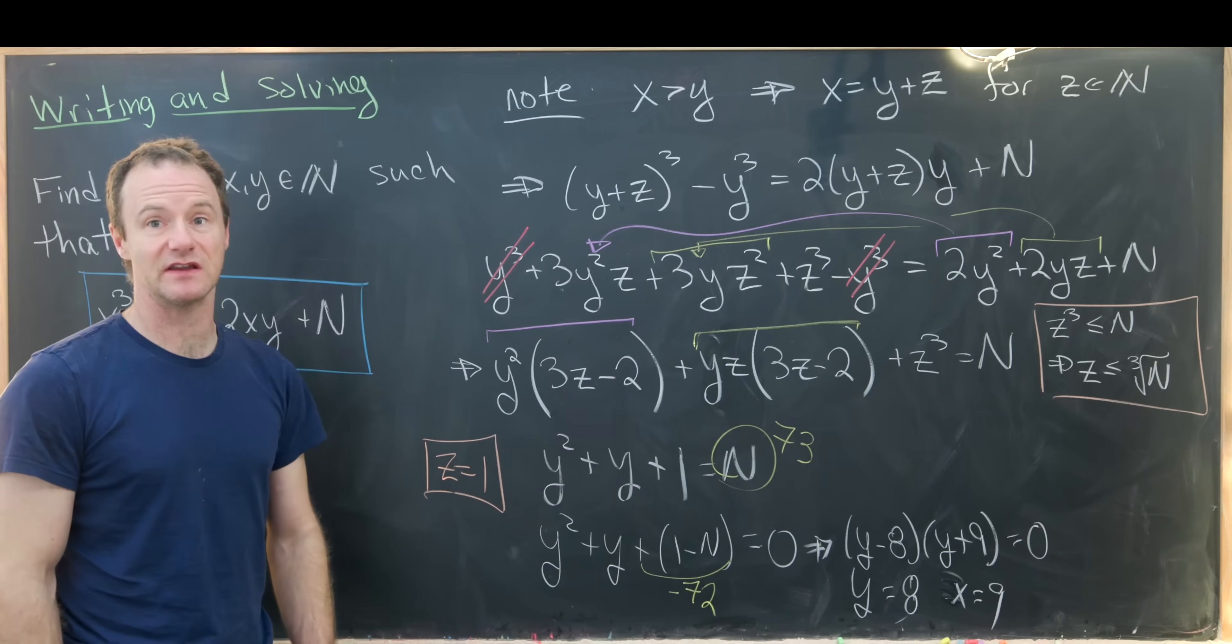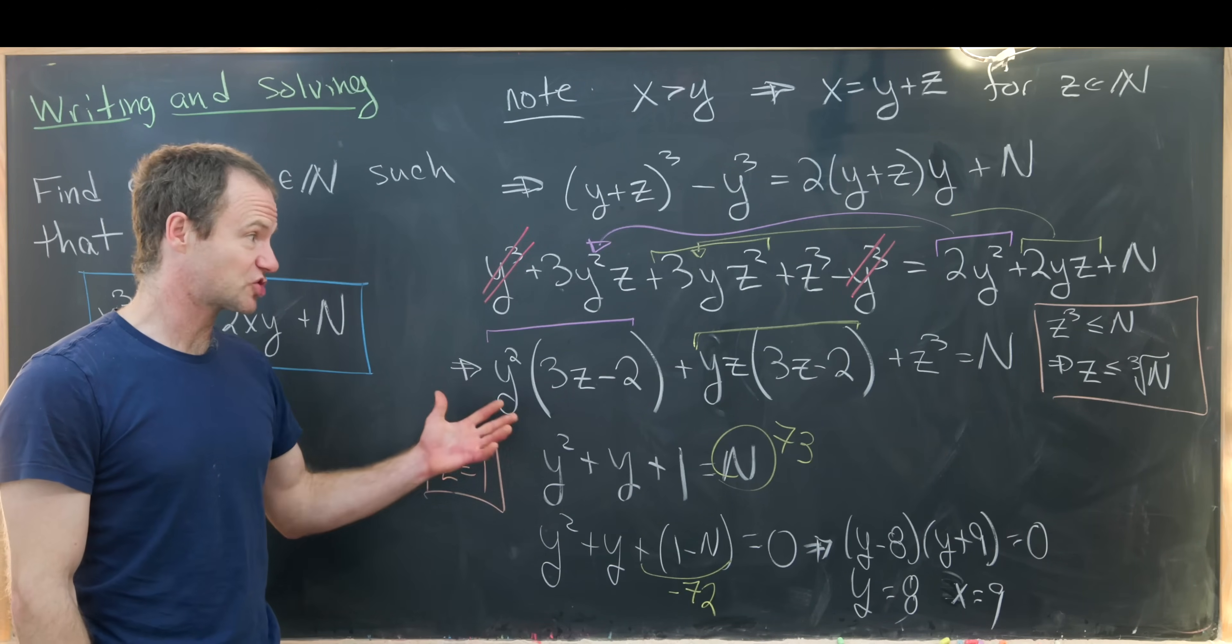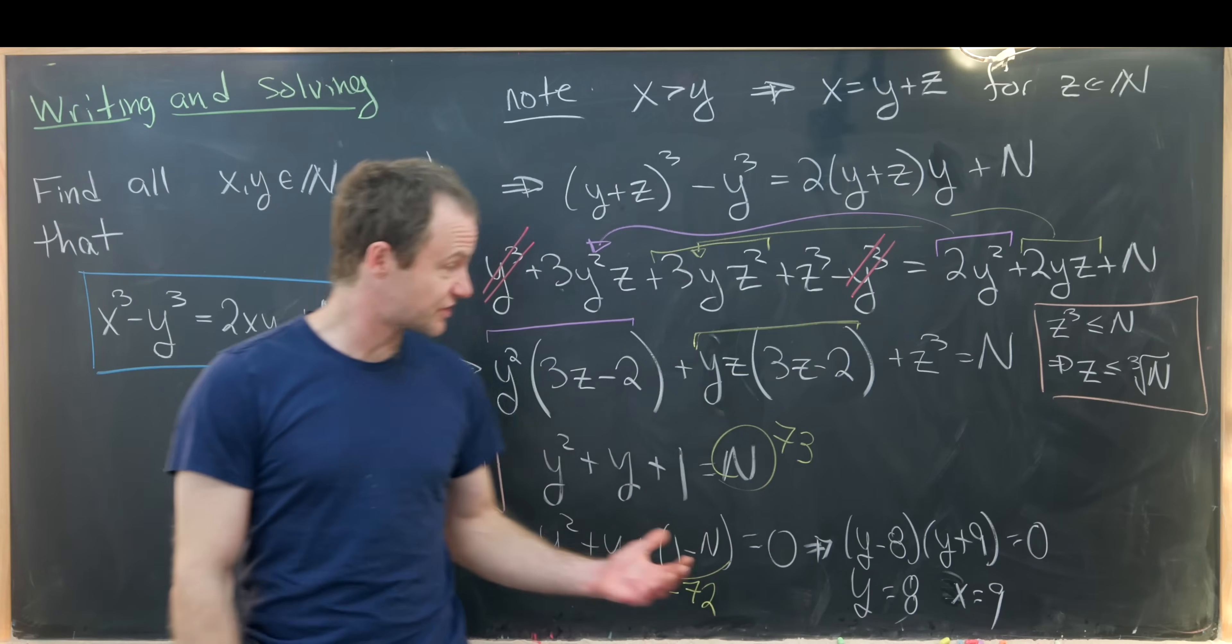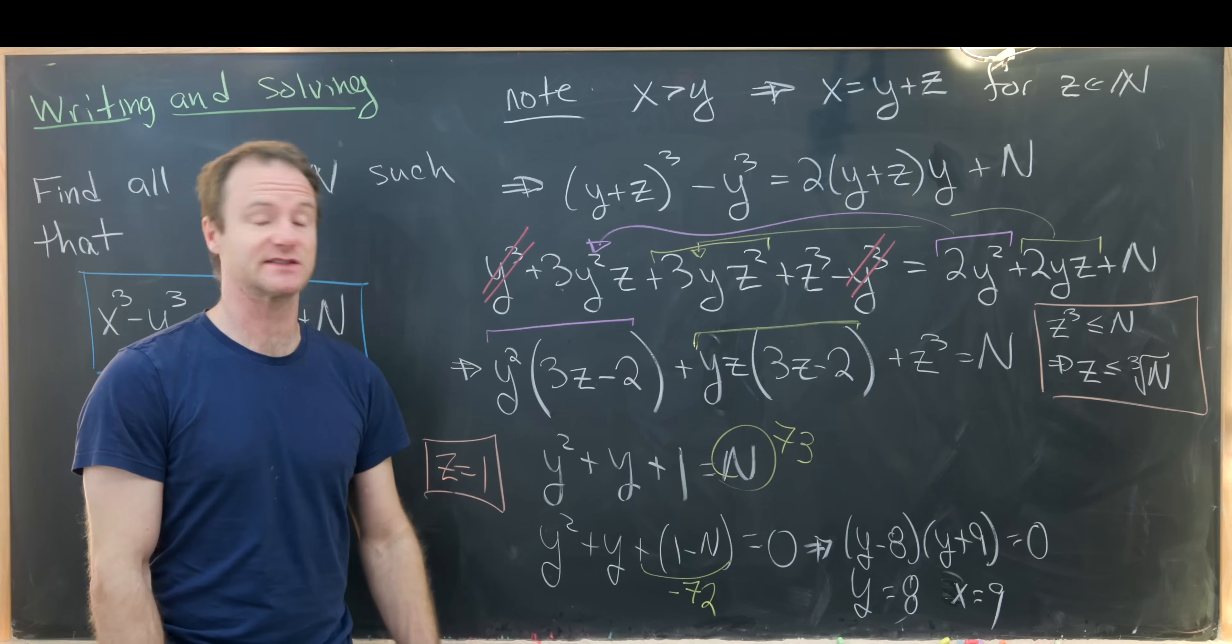So that gives us a solution in this case when N is equal to 73. Like I said, we're trying to construct an equation in the first place, so I think we've constructed a nice equation that has a solution.